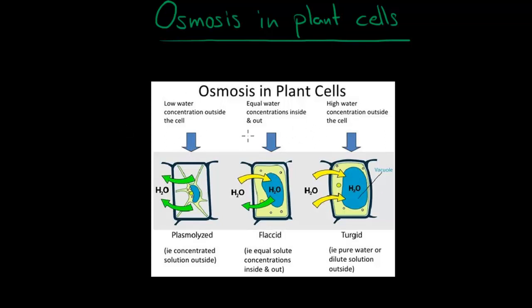But before we get into details about how osmosis drives transpiration, let's talk about the different states of cells regarding water. In a plant cell, if more water escapes than the water that enters the cell, then this cell is going to shrink or it's going to get plasmolyzed.